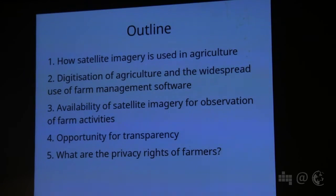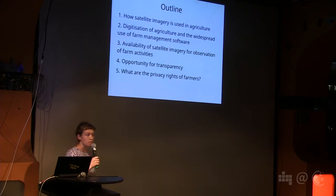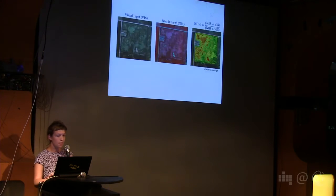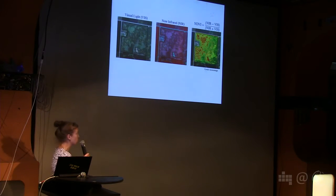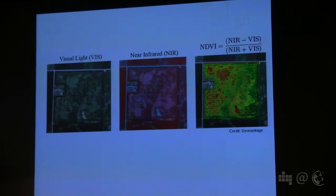Then I'm going to talk about the availability of satellite imagery for observation of farm activities and how this is an opportunity for transparency, but at the same time we need to question what the privacy rights of farmers are. So first, how is satellite imagery used in agriculture? On your left-hand side there's a satellite image in visual light — true color imagery — which is what we see in Google Earth, used for mapping purposes. But what's really important is the center image, which is near-infrared light, and what that measures is the reflection of chlorophyll in plant cells — essentially the photosynthesis levels.